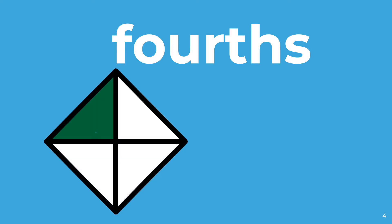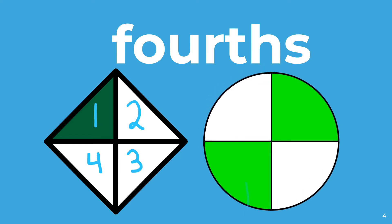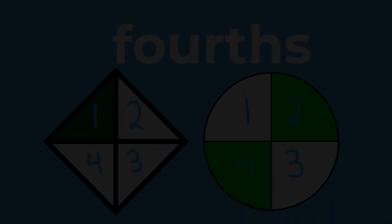Fourth is a word for when an object has been partitioned or divided into four equal parts. This diamond has one, two, three, four parts so it is partitioned into fourths. This circle has one, two, three, four parts as well, so it too is partitioned into fourths.